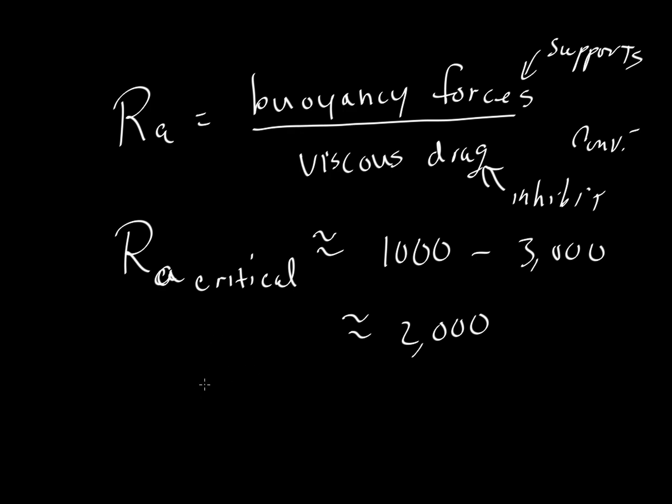Let's just use a ballpark number of about 2,000 for the number, the way we'll express it in a moment. So if the Ra is greater than 2,000, then we would have convection, and if it's less than 2,000, then we would have conduction.